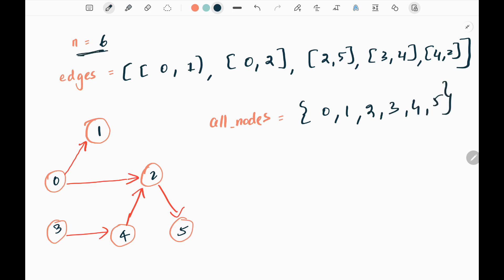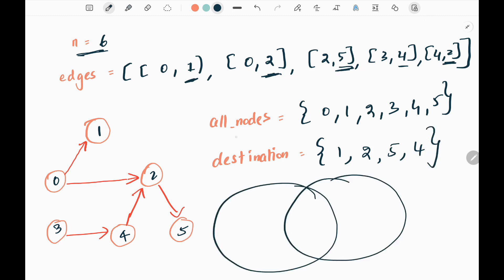We're just creating the number of vertices that is given in the graph. Then using the edge input, I'm going to pick the destination nodes, that is the destination vertices only, in a separate set. Here we have one, then we have two, then we have five, then we have four. Since it is a set, we don't have to repeat the nodes.